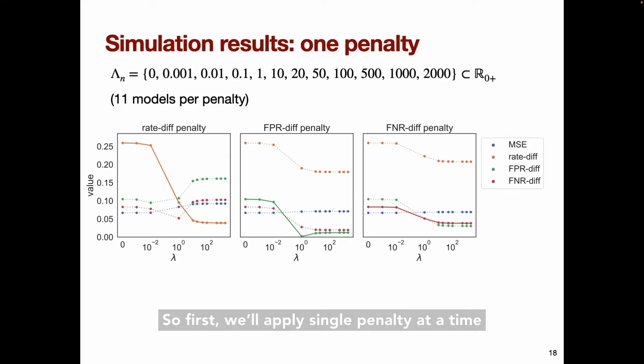So first we'll apply a single penalty at a time for each of the three unfairness measures. Again, here's the set of lambdas, the penalty weights that we consider, ranging from zero, representing no penalty, to 2,000, representing a large penalty. This results in 11 models per penalty. On the left panel, we apply a penalty to the rate difference, in the middle panel to the false positive rate difference, and on the right panel, the false negative rate difference. In each panel, we plot all three unfairness measures, and we plot the mean squared error in blue.